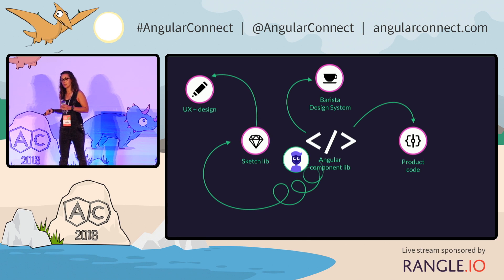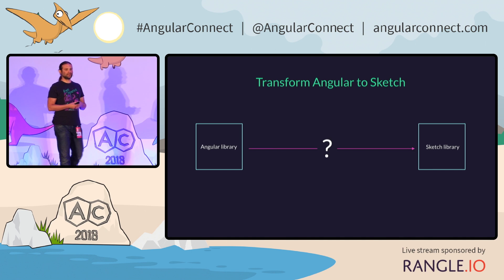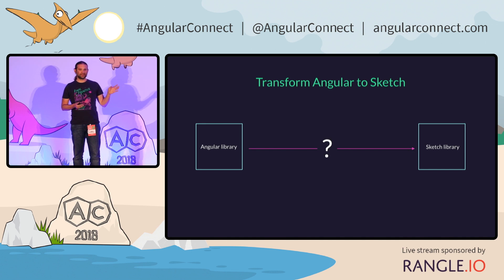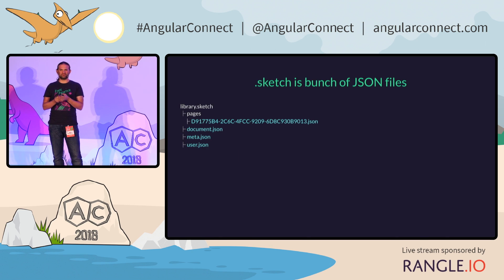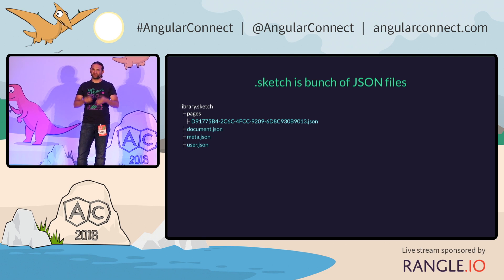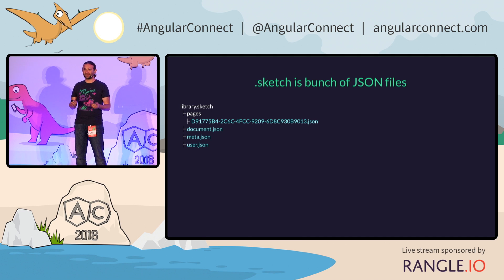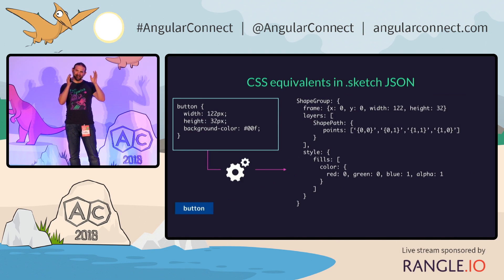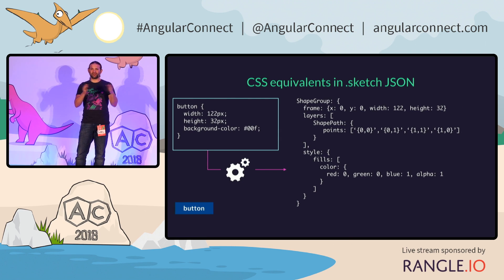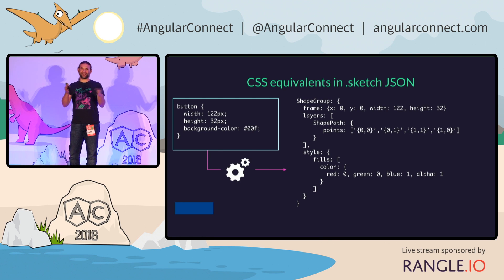We could use the Sketch library, which is the basis of our mockups and designs. How do we get to an automatically generated Sketch library? Well, Sketch is merely a bunch of JSON files — you can unzip it and look at a couple of JSON files. They are huge, taking several megabytes, but if it's JSON, and you're a developer, it means we can hack that. We're looking for CSS equivalents for Sketch JSON. Let's take the button example — let's remove the text and look at a blue rectangle.